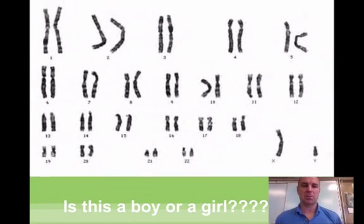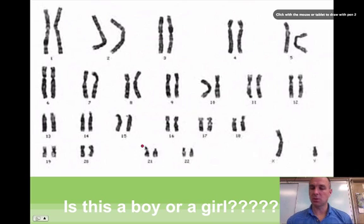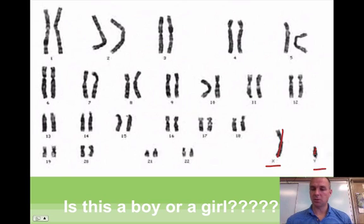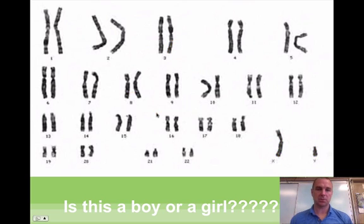Can you look up here and tell me if this is a boy or a girl? You're going to have to do this on the test. You look right down here at the bottom — it has one long one and one short one, which means it's a boy. How many chromosomes do they have? They've got equal numbers, so they've got 46 chromosomes.